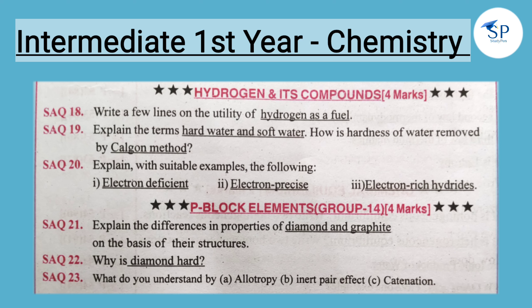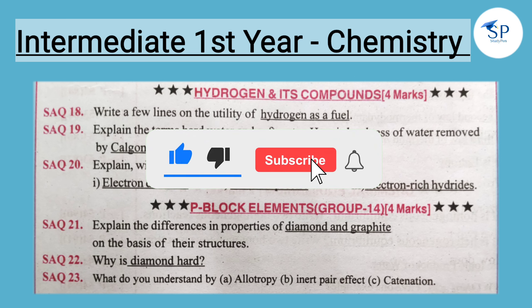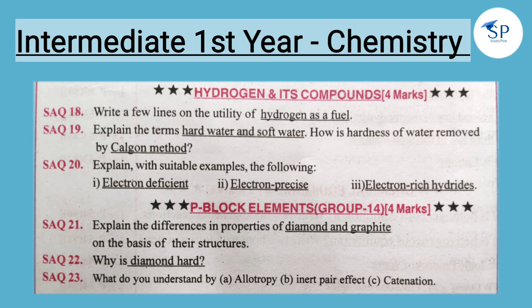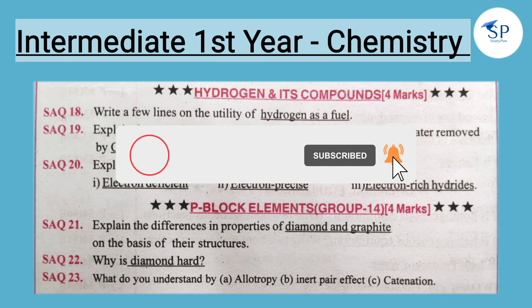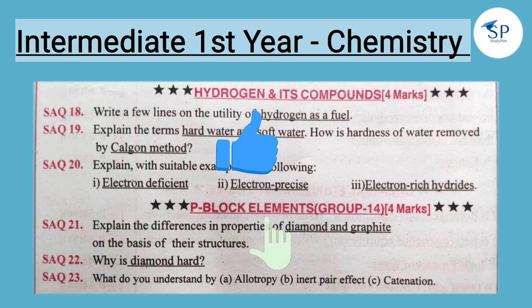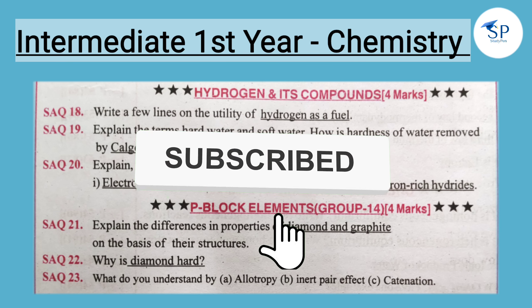For organic chemistry 4-mark questions: explain position isomerism and functional group isomerism with one example each, and explain Friedel-Crafts alkylation with one example. You have 6 to 8 four-mark questions. For very short answer questions, we have 2-mark questions in the pre-final examination chemistry. The main topics cover p-block; total long answer, short answer, and very short answer — chemistry is theoretical and not always easy.